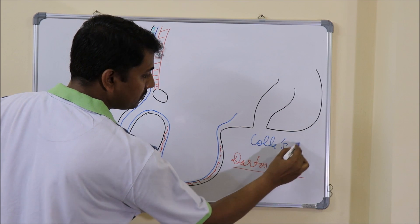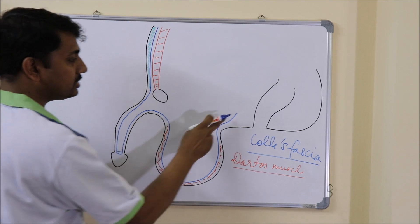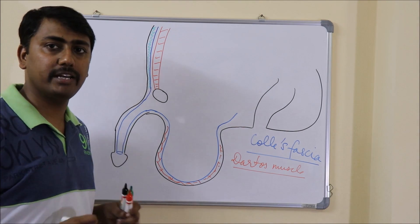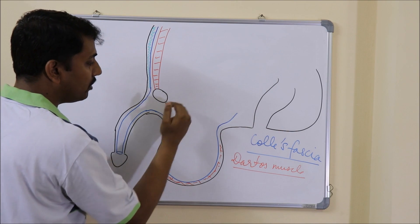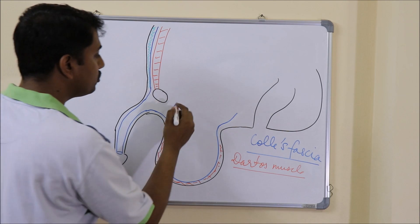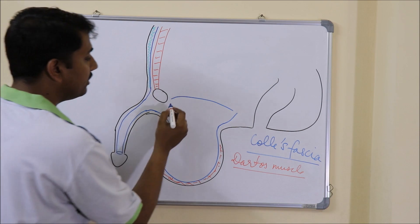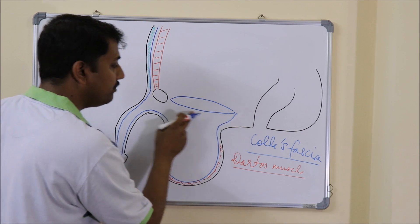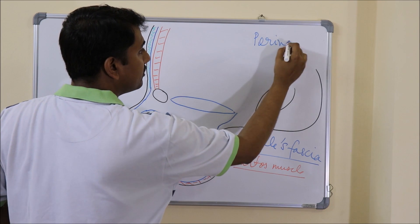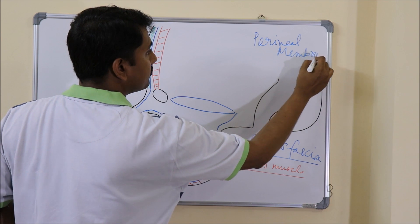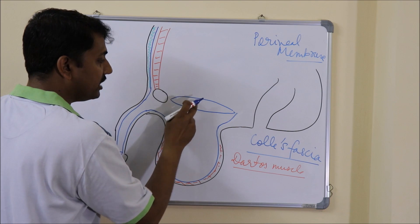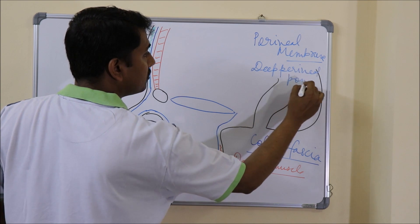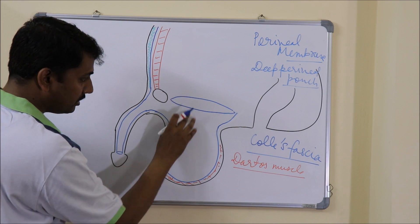After covering the wall of the scrotum, the Dartos muscle continues as a fascia known as Colles fascia. This Colles fascia then gets attached to the posterior border of the perineal membrane. Now we have to understand the concept of the perineal membrane. Let us assume this is the pubic arch, and from this pubic arch two fasciae are getting attached: a superior fascia and an inferior fascia. This inferior fascia is also known as the perineal membrane.